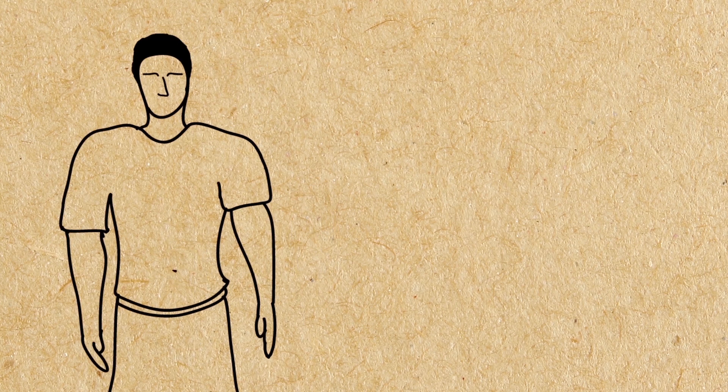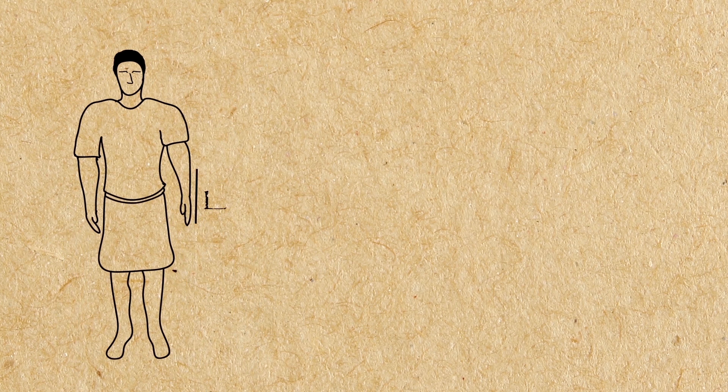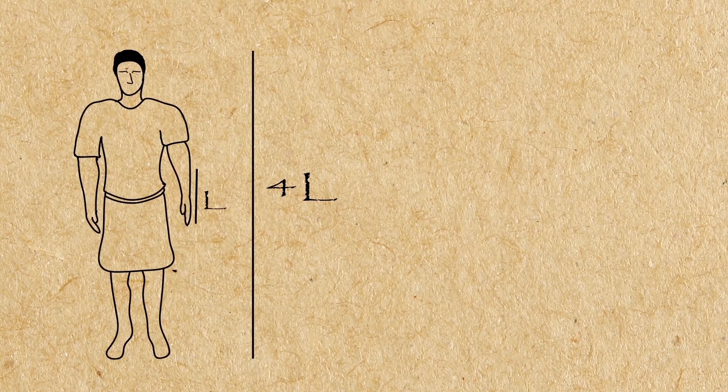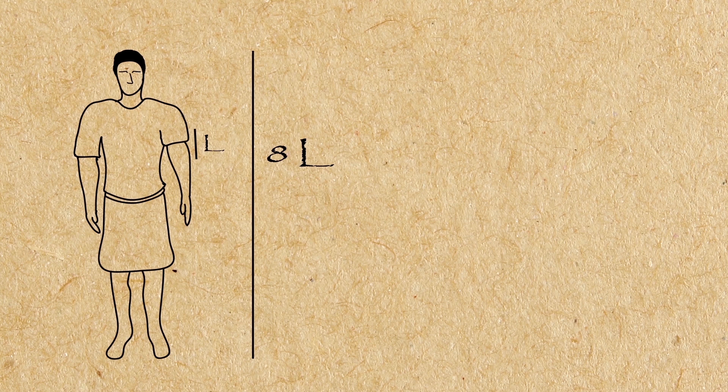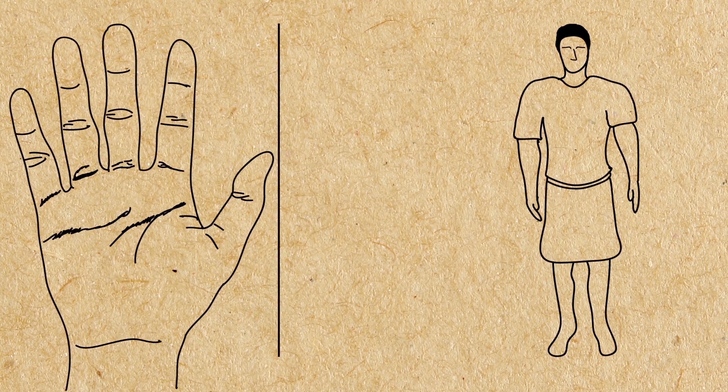The distance from the elbow to the tip of the hand is one-quarter of the height of a man. The distance from the elbow to the armpit is one-eighth of the height of a man. The length of a hand is one-tenth of the height of a man.